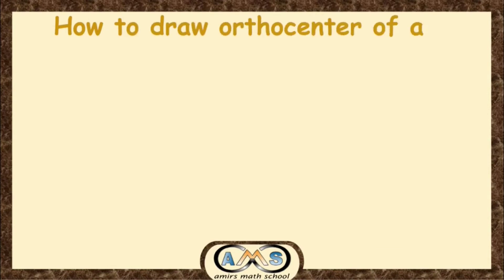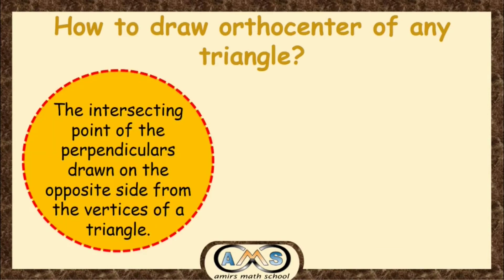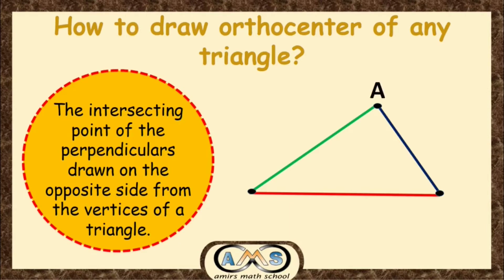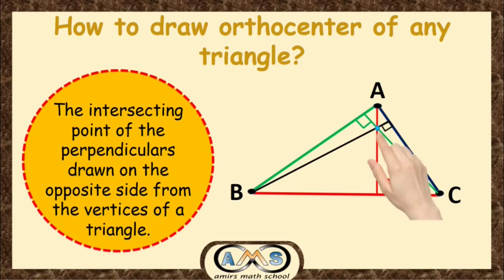Now let's see how to draw the orthocenter of any triangle. The orthocenter is the intersecting point of perpendiculars drawn from the vertices to the opposite sides of a triangle. This is our triangle ABC. From A, draw a perpendicular to BC; from C, draw a perpendicular to AB; and from B, draw a perpendicular to AC. These three perpendiculars intersect at this point, which is our orthocenter for triangle ABC.